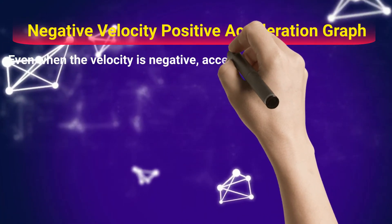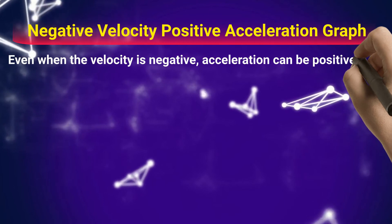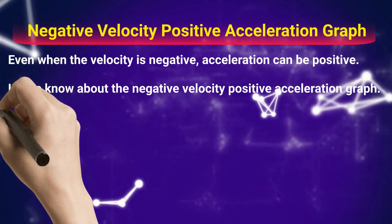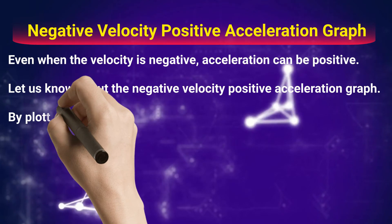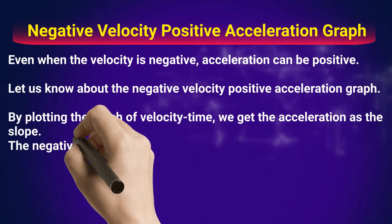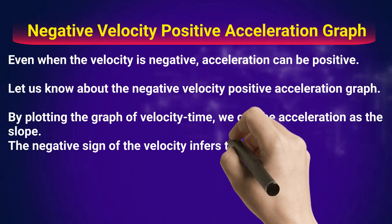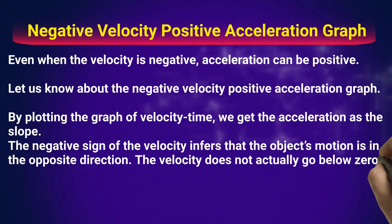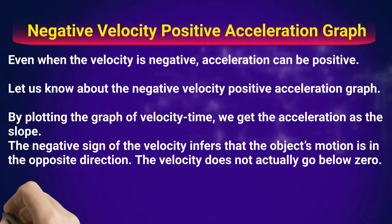Even when the velocity is negative, acceleration can be positive. By plotting the graph of velocity versus time, we get the acceleration as the slope. The negative sign of the velocity infers that the object's motion is in the opposite direction. The velocity does not actually go below zero.